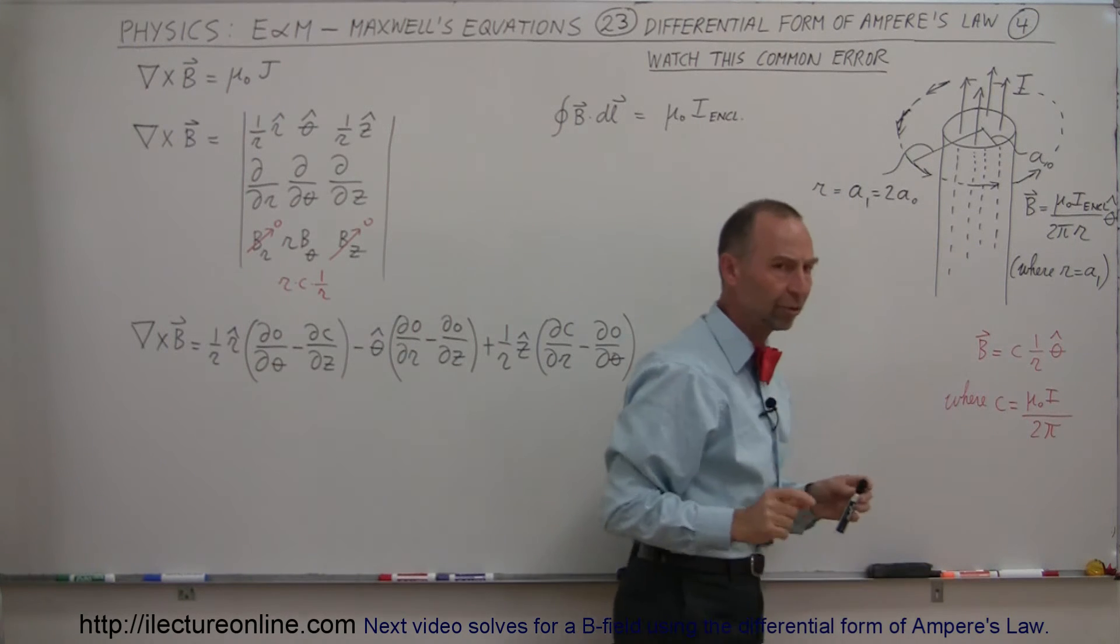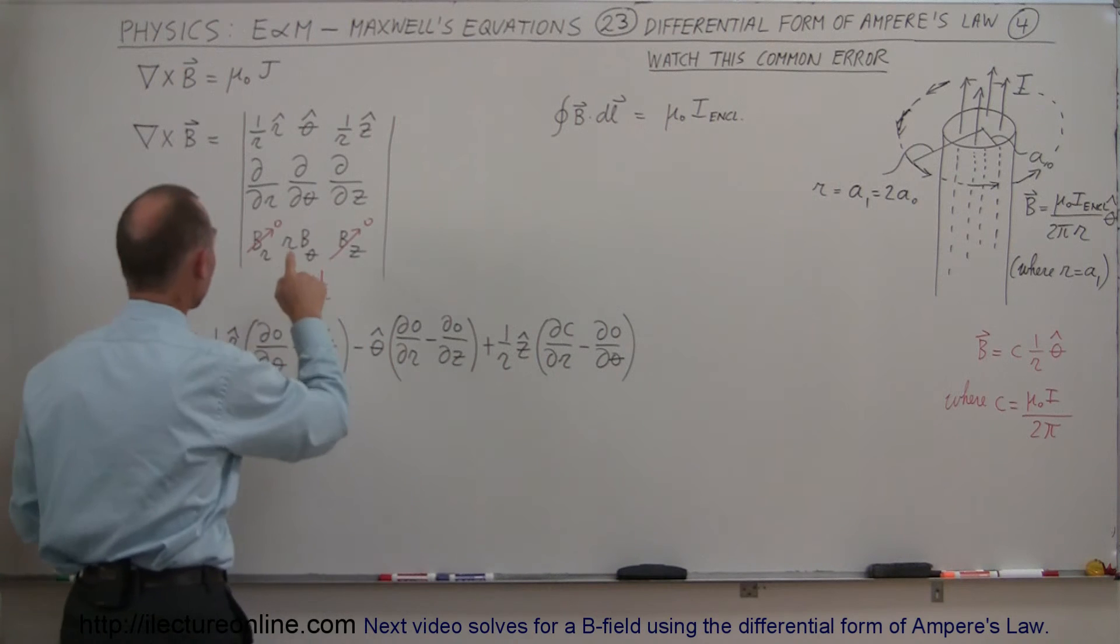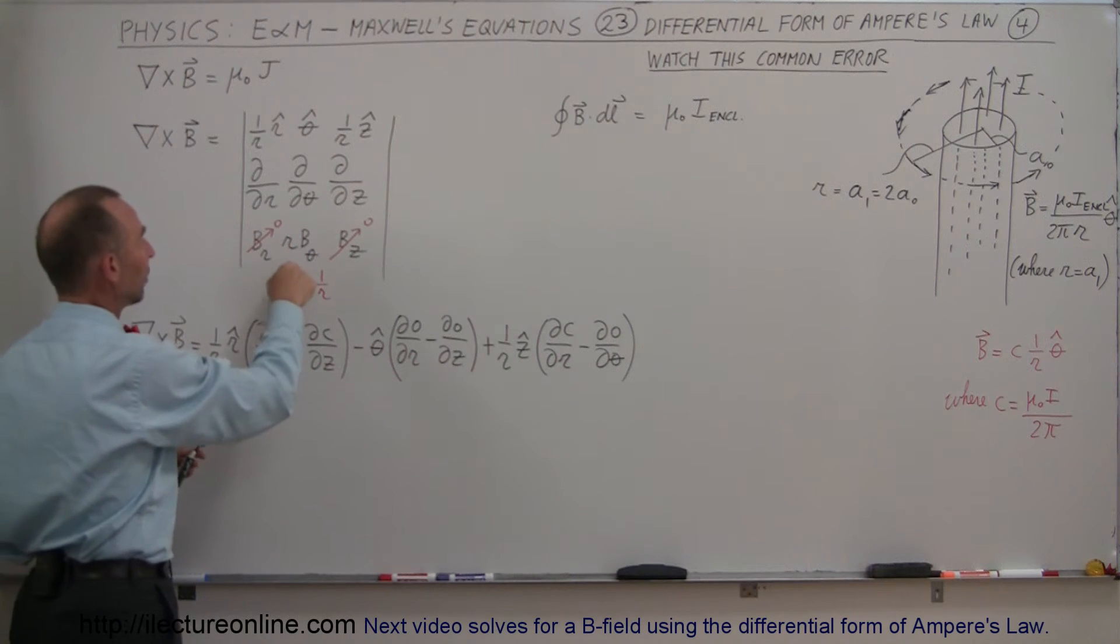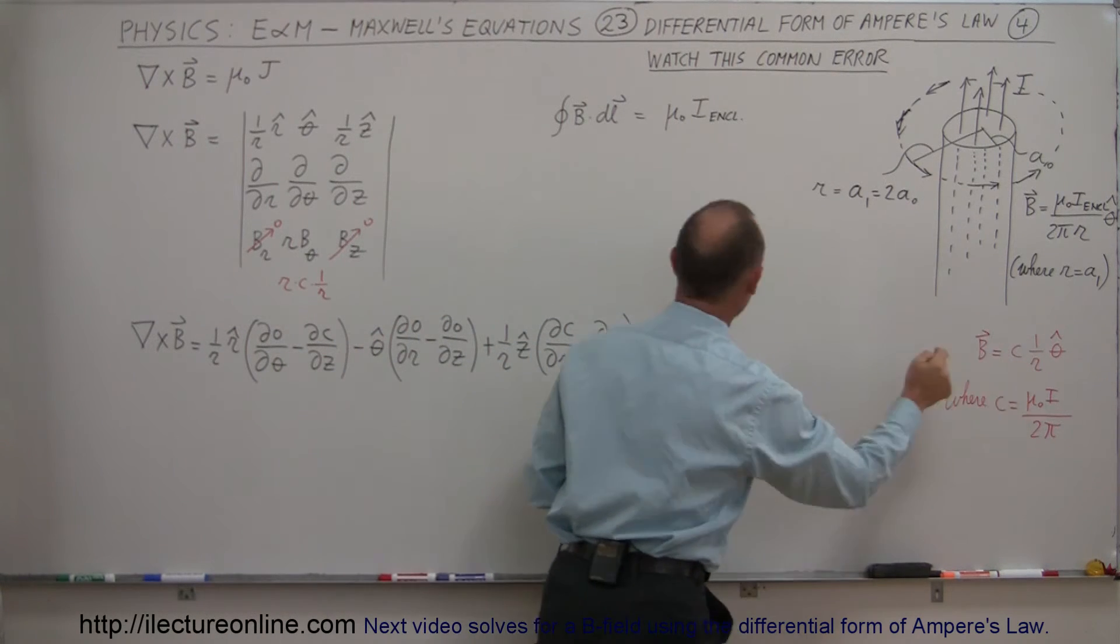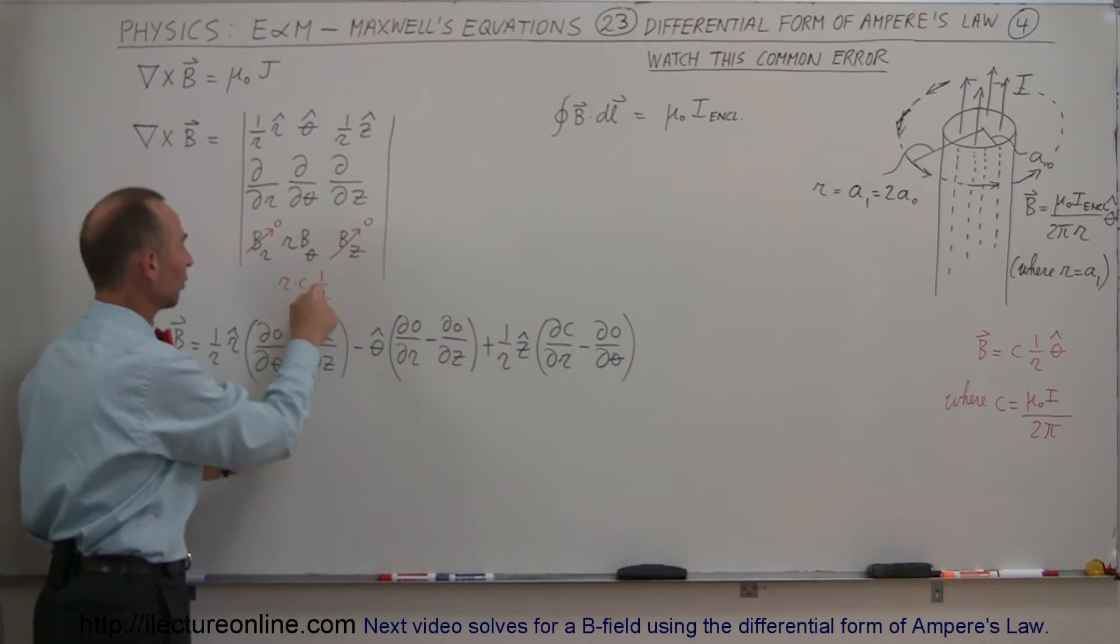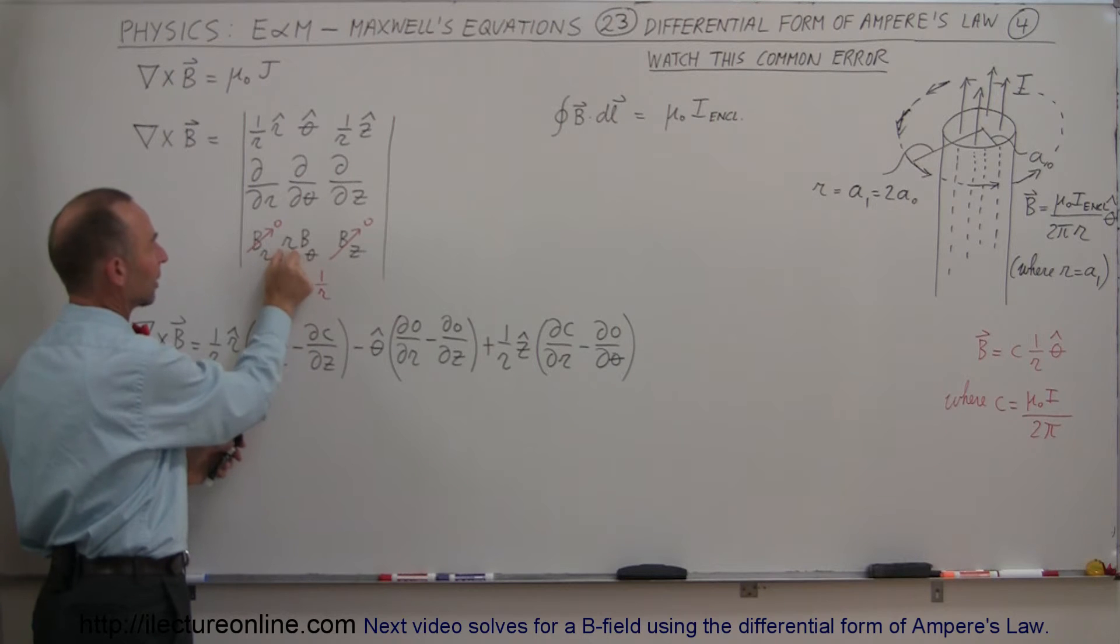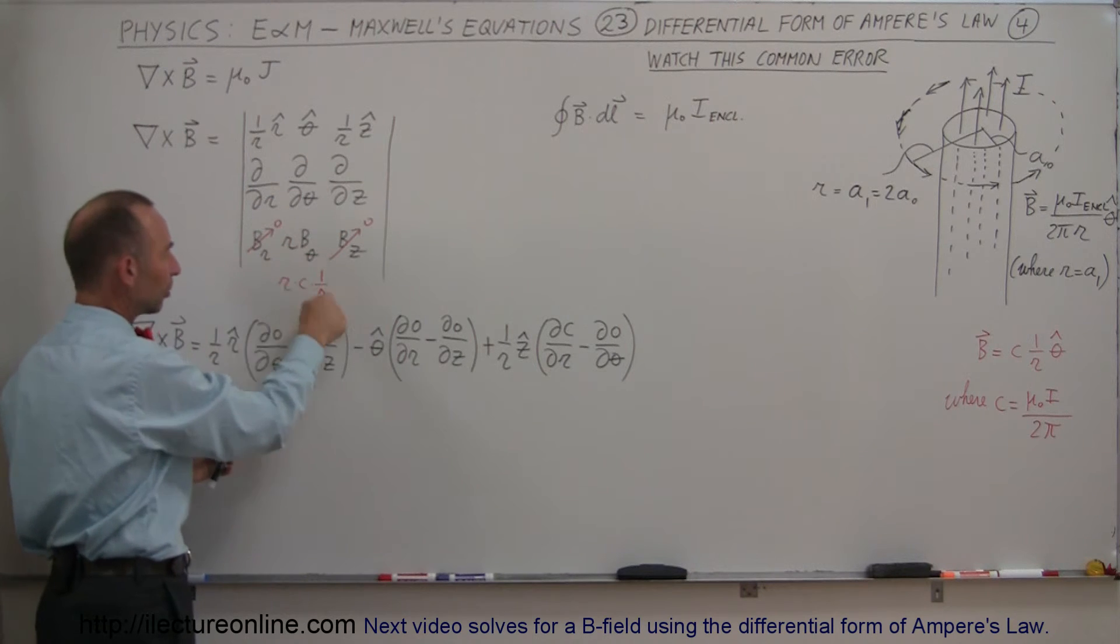If we then plug that into our curl right here and we plug that in here, notice instead of B we're going to write c times 1 over r. And that's right here, c times 1 over r. And multiply times the r over here—that's part of the curl—then the r's will cancel out.